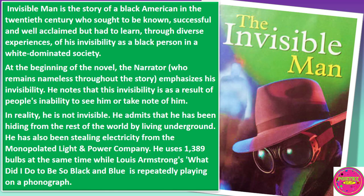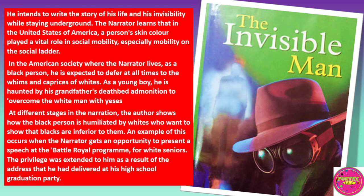At the beginning of the novel, the narrator, who remains nameless throughout the story, emphasizes his invisibility. He knows that this invisibility is as a result of people's inability to see him or take note of him. In reality, the narrator is not invisible. He admits that he has been hiding from the rest of the world by living underground. He has also been stealing electricity from a manipulated light and power company. He uses 1,369 bulbs at the same time, while Louis Armstrong's 'What Did I Do to Be So Black and Blue' is repeatedly playing on a phonograph. He intends to write the story of his life and his invisibility while staying underground.